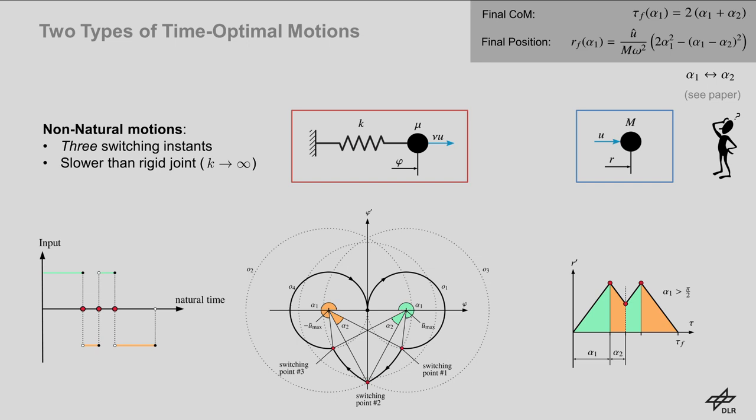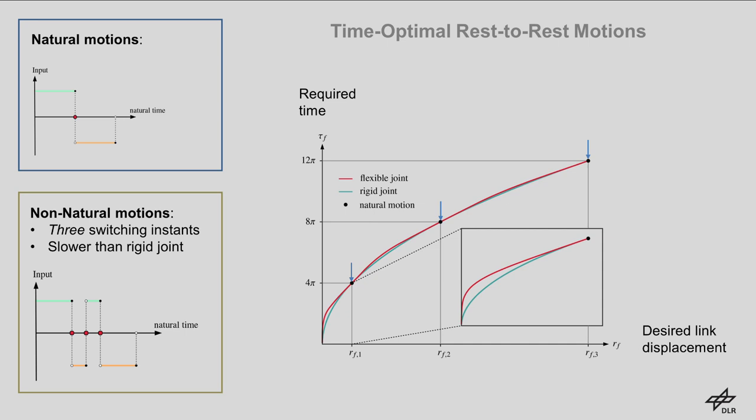The areas in between the achievable link displacements are filled by the second class of time-optimal trajectories. The second family of time-optimal motions is characterized by a bang-bang control policy with three input switchings. We switch between two phases of maximum positive control input and maximum negative control input each. Again, the total displacement is given by the area under the curve of the center of mass velocity over time. Angle α1 denotes the first switching time. As we show in our paper, through geometrical reasoning, the remaining two switching times are uniquely determined by the first switching time.